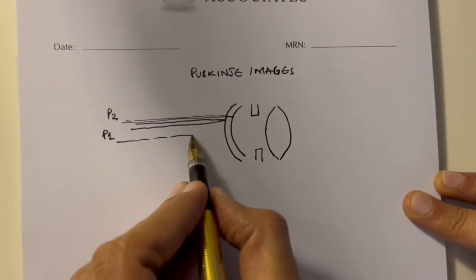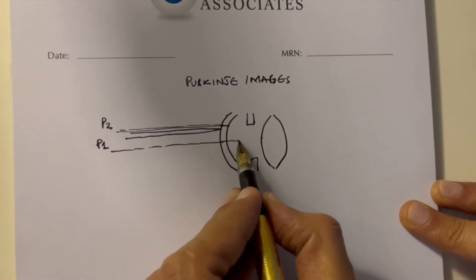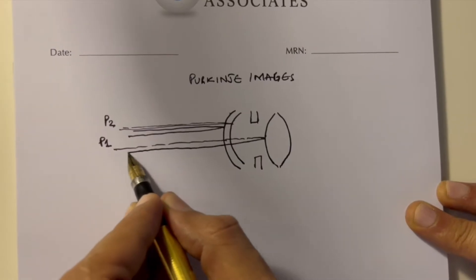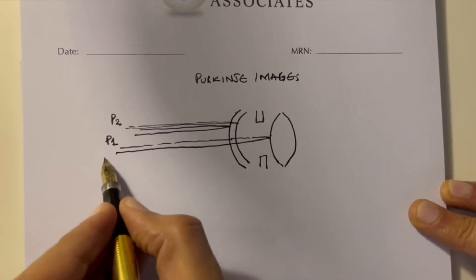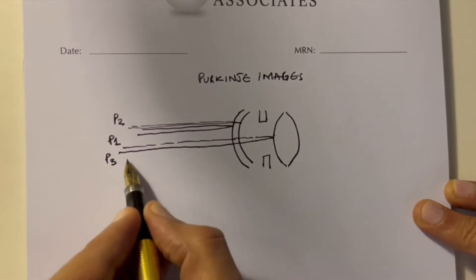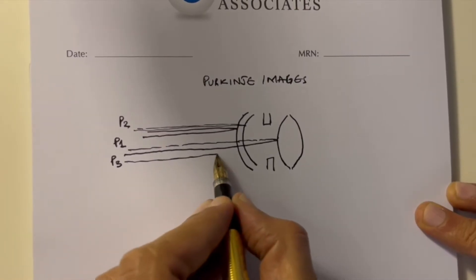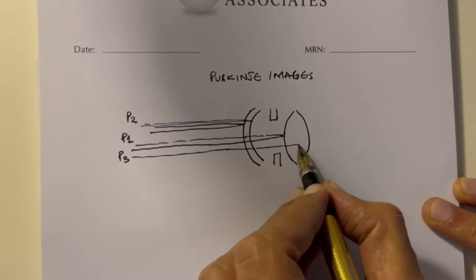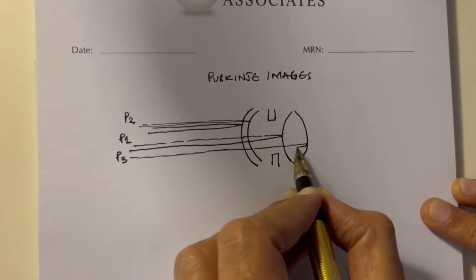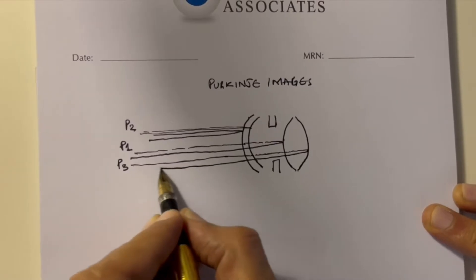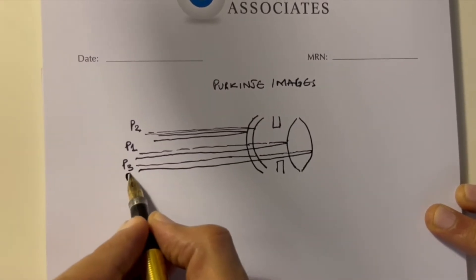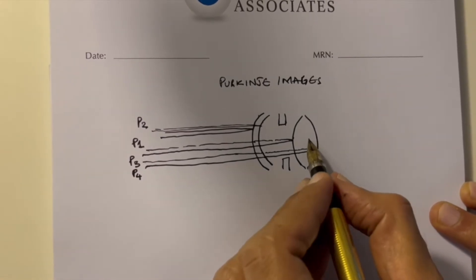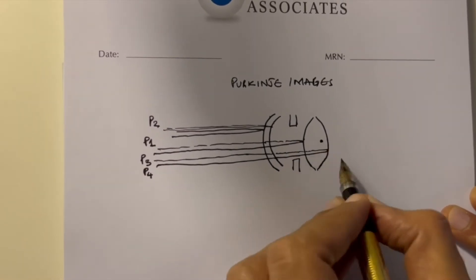There are also lights which cross the cornea, pass through the anterior chamber, and reflect from the anterior surface of the lens — that is Purkinje image three. Then light passing through the cornea, anterior chamber, and the lens reflects back from the posterior aspect of the lens, which is Purkinje image four. Now, what you need to know is that the nodal point of the eye is on the posterior side of the lens.